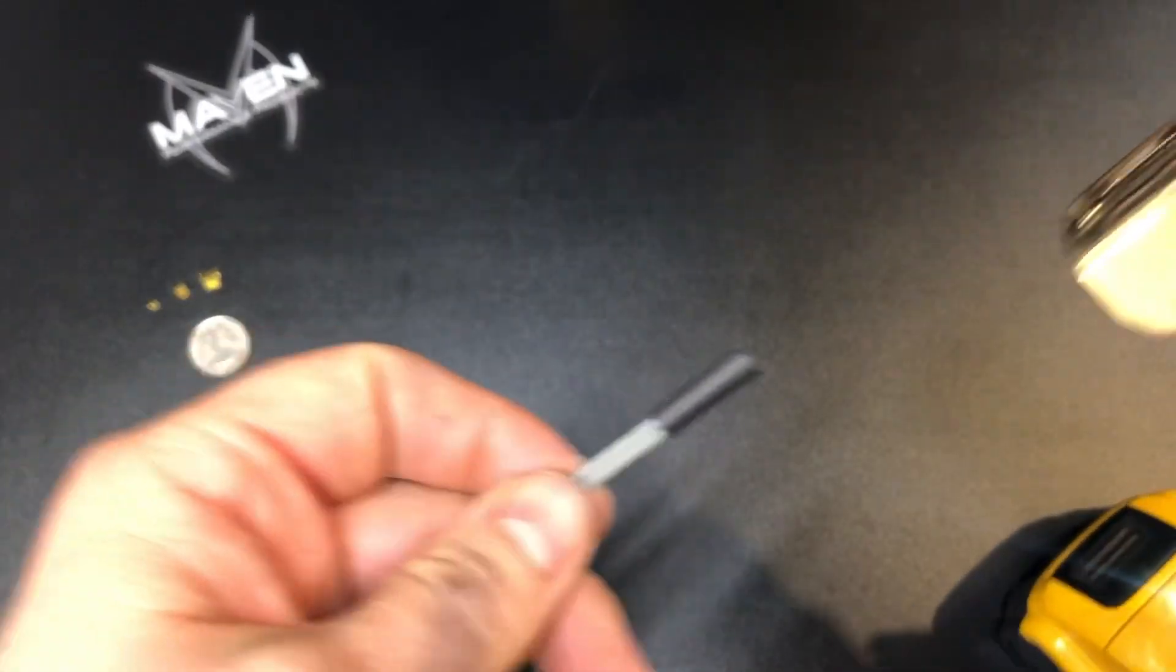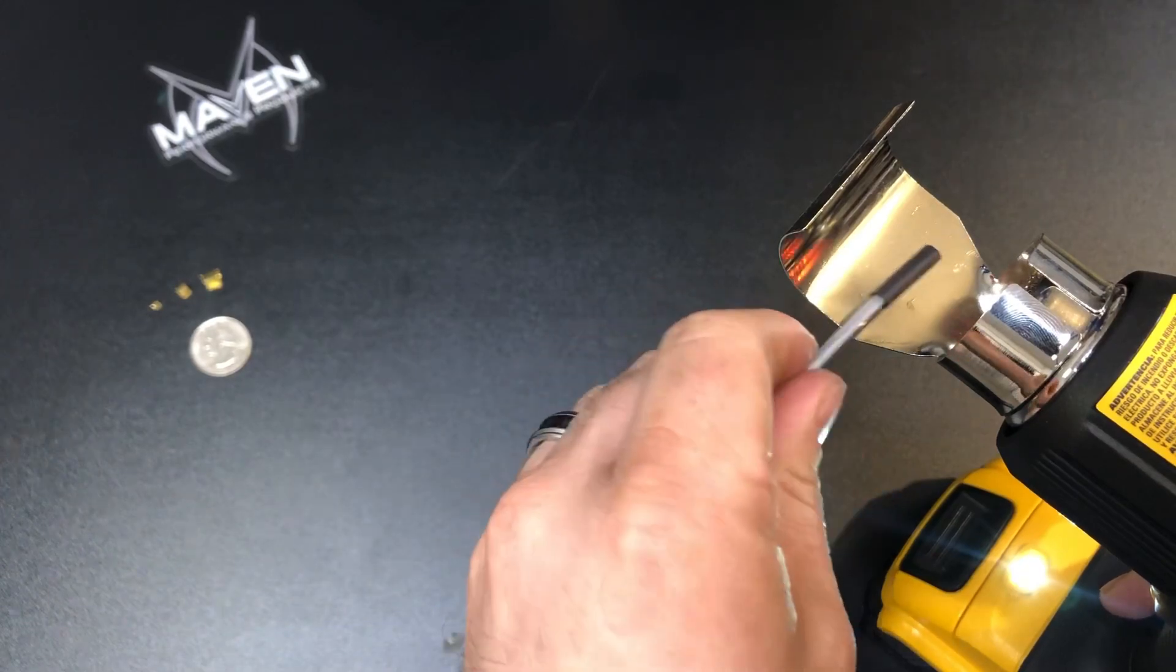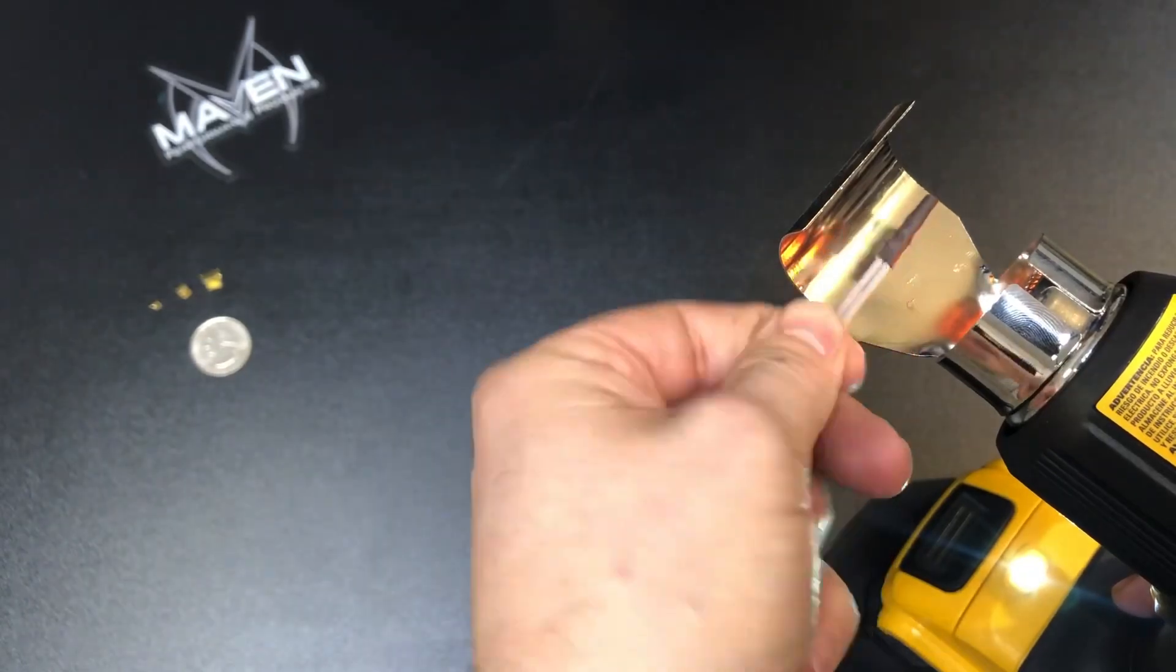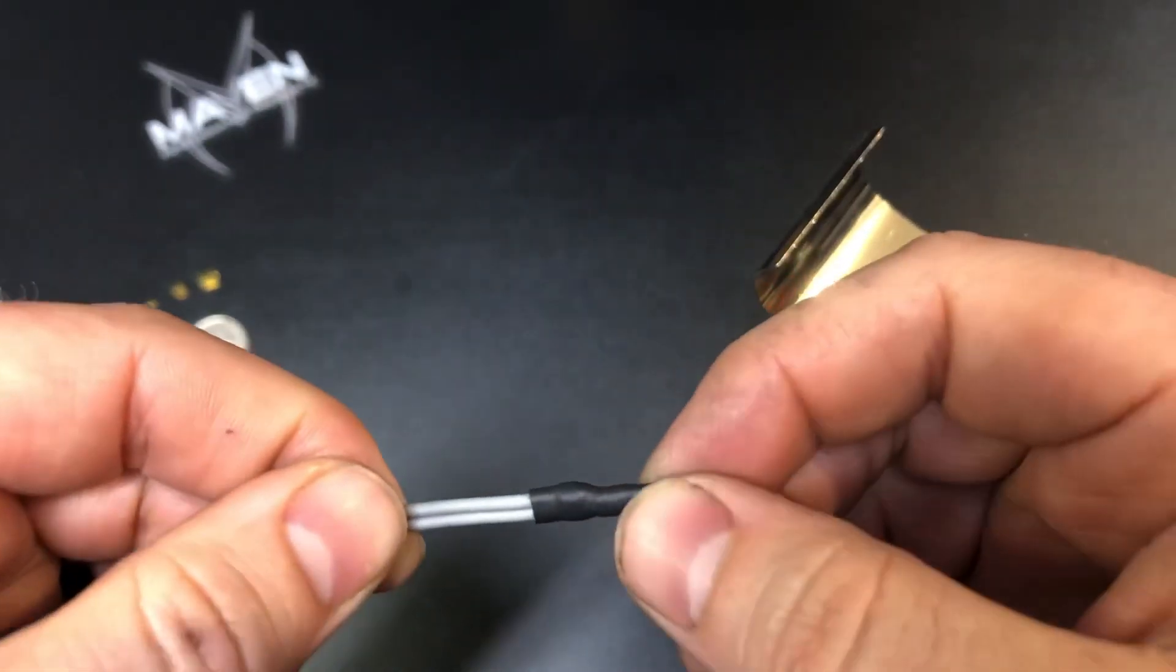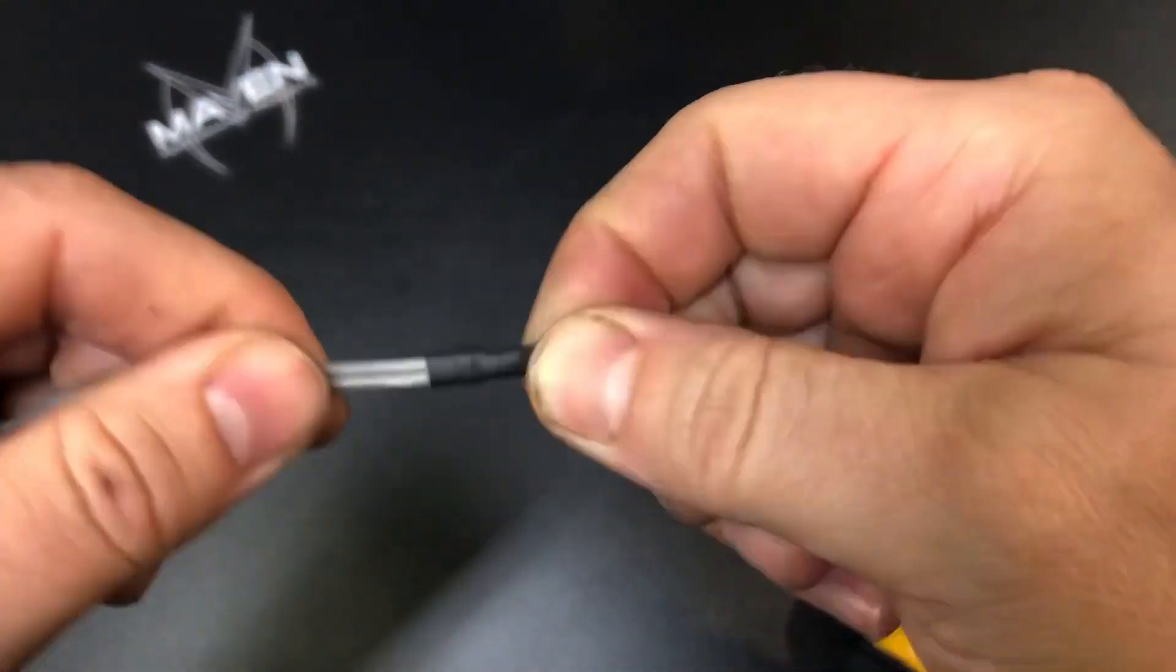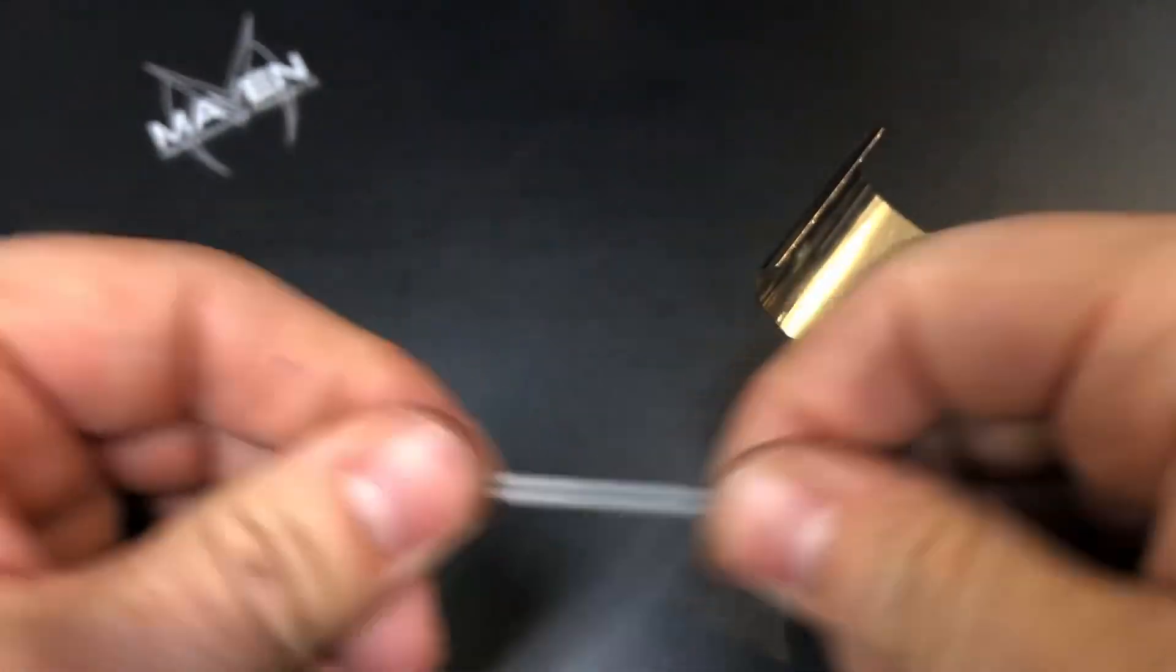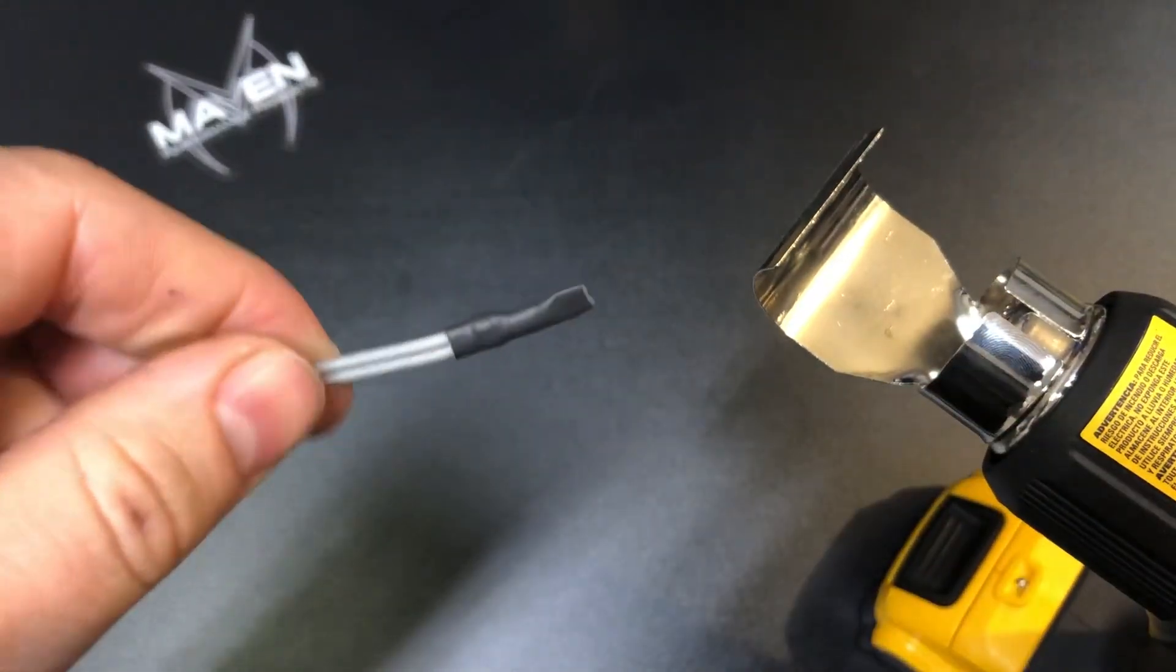We'll go ahead and come over here to the heat gun. This is adhesive-lined also, so just kind of give it a pinch there and it kind of sticks itself together. And there you have it. You have another splice, good to go. Hope this helps.